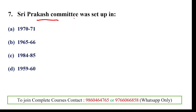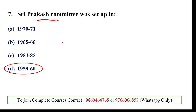Seventh question: Shri Prakash Committee was set up in which year? The answer is 1959 to 1960. The major area Shri Prakash Committee concentrated on was religious and moral instruction. It was appointed under the chairmanship of Shri Prakash and held two meetings in November and December 1959 in Bombay. The committee recommended giving education in both religious and moral areas.